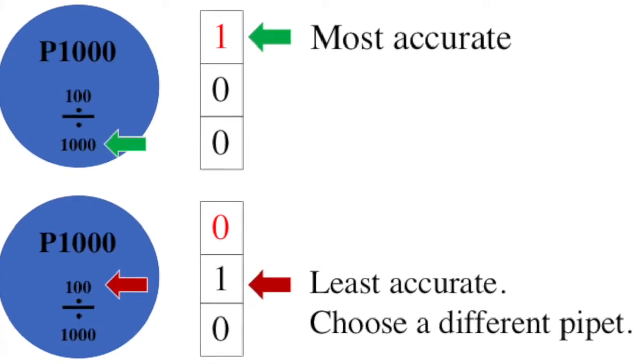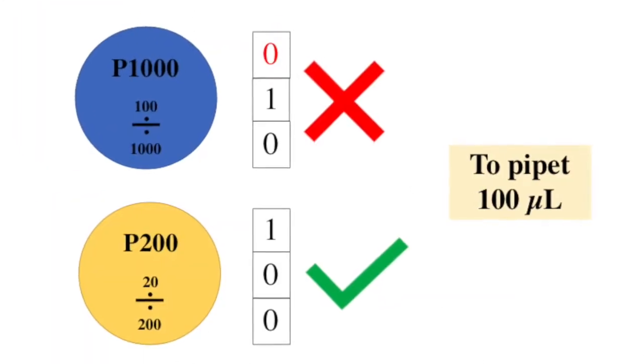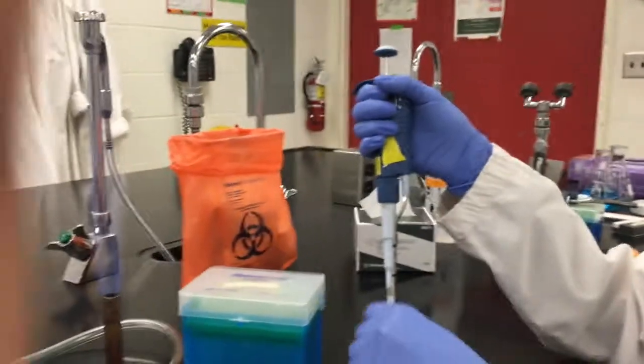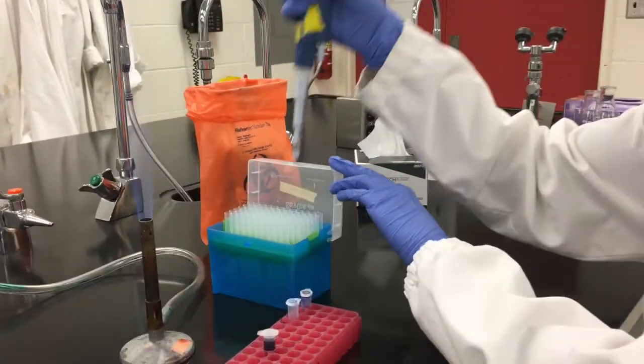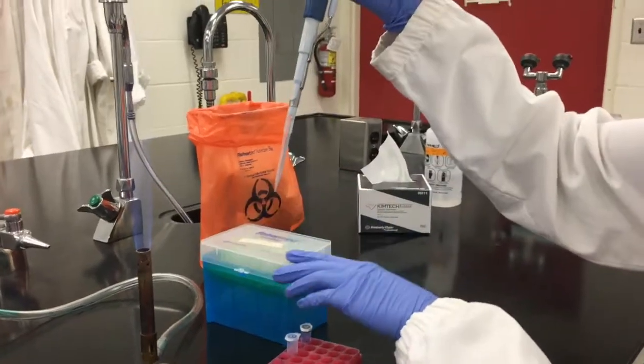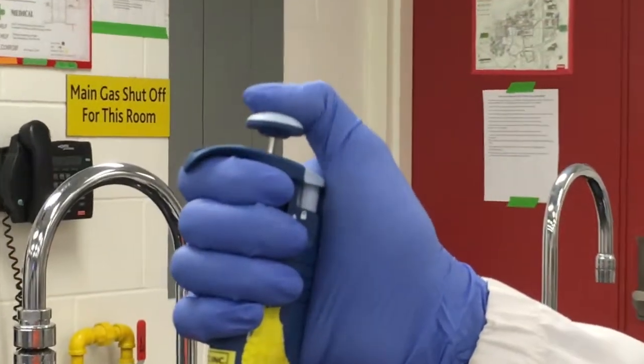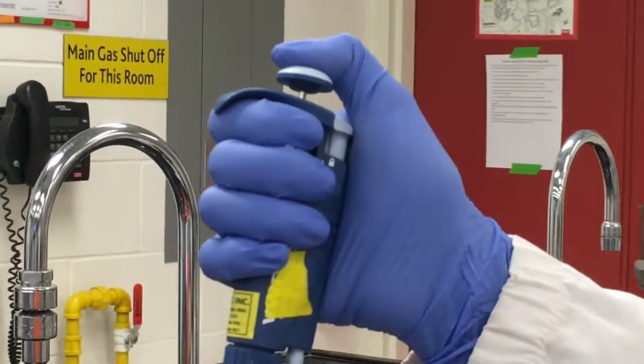For volumes nearing the bottom 10% of pipette capacity choose a smaller denomination pipette such as the P200 in this case. Grasp your pipette as shown and aseptically attach a suitable pipette tip firmly but not forcefully. Depress the plunger to the first felt stop which is the measured amount corresponding to your setting.